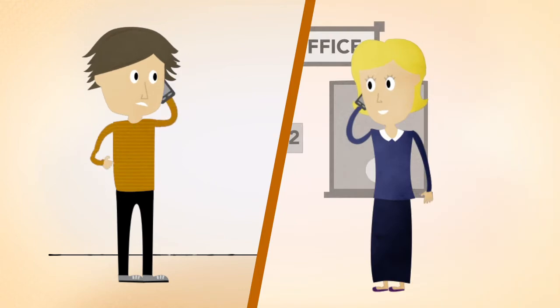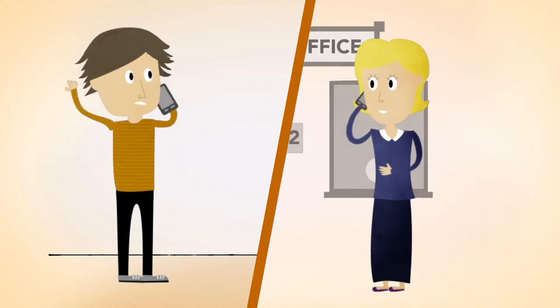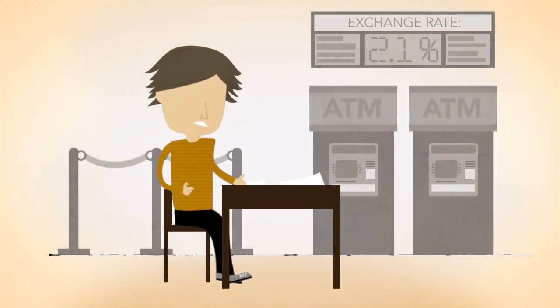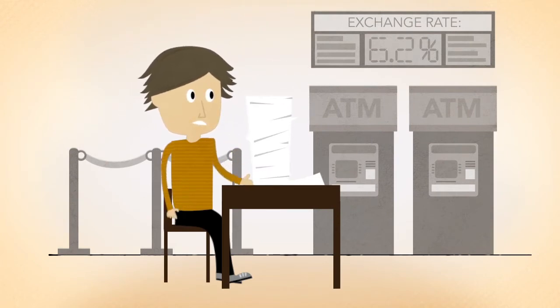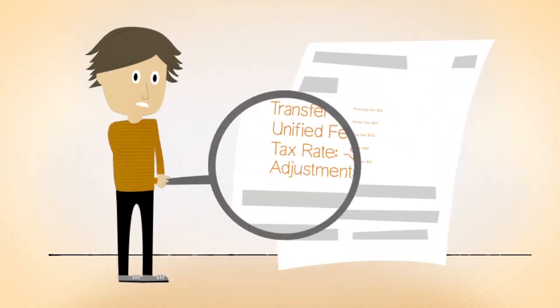First, Henry has to contact the school and get their payment instructions. Then he has to visit his local bank, fill out loads of paperwork, and accept whatever rate the bank offers, plus all the hidden fees they charge.